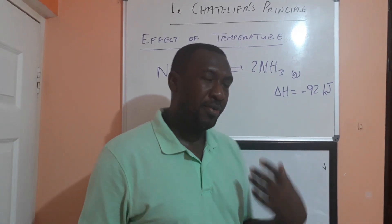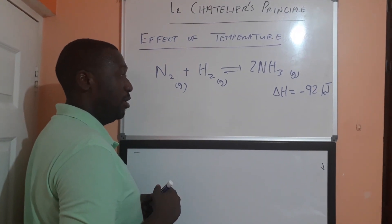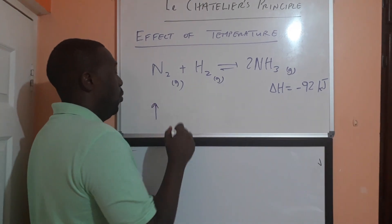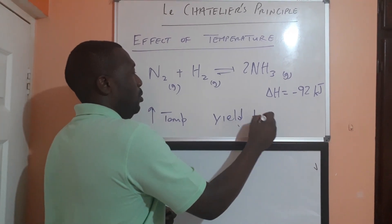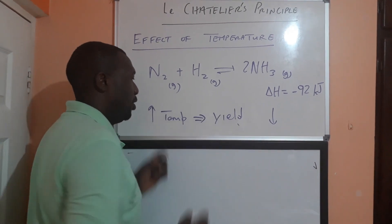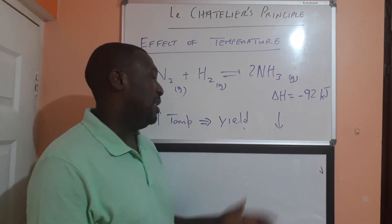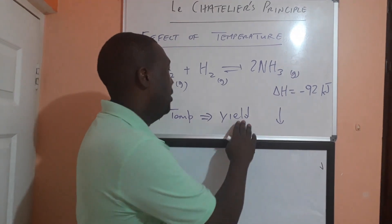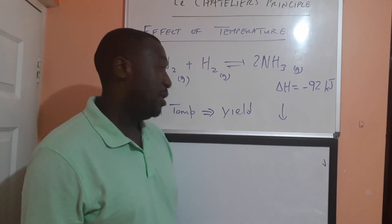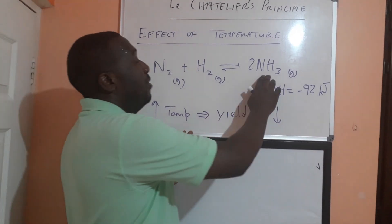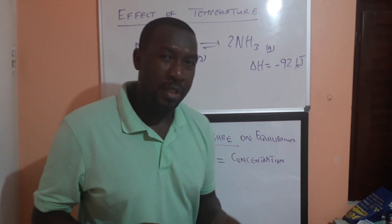In other words, the endothermic reaction will be favored. So if I increase the temperature on this reaction, the forward reaction is exothermic, therefore the reverse reaction would be endothermic. So increasing the temperature here would cause the yield to decrease. Increasing temperature would shift equilibrium to the left. Another way of saying that is: more nitrogen and hydrogen will be formed and less ammonia. To increase the yield of ammonia, I would employ low temperature conditions.